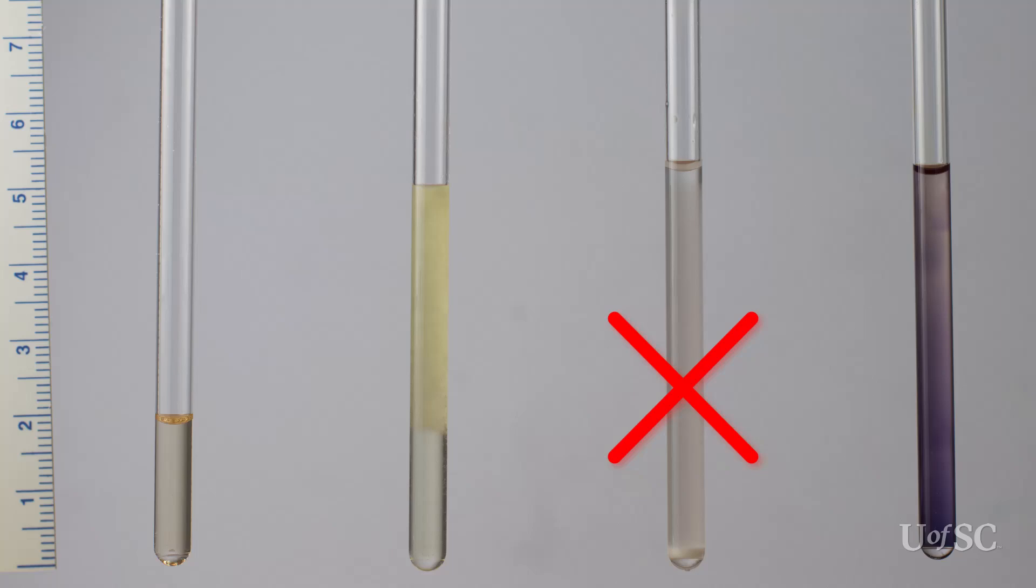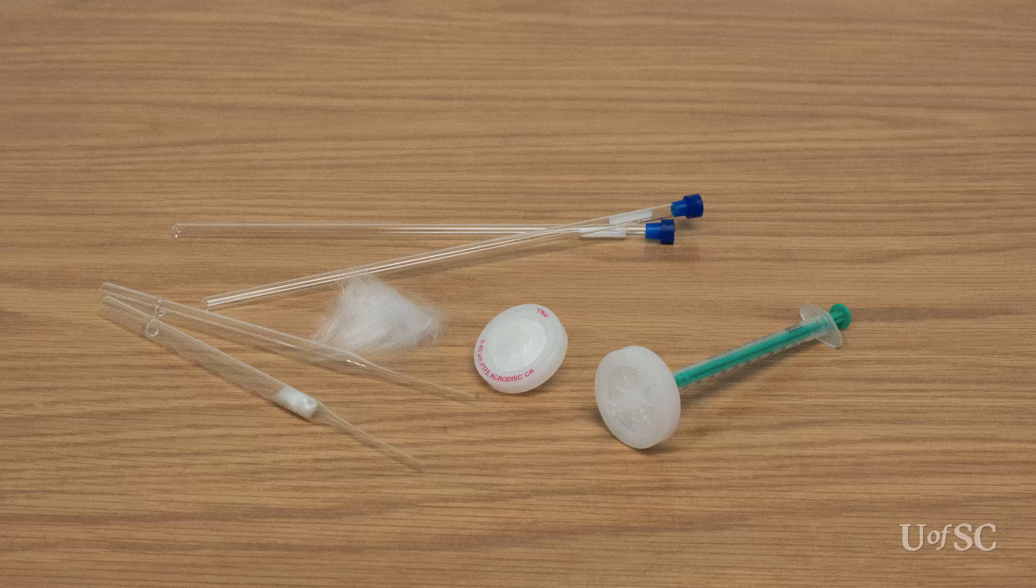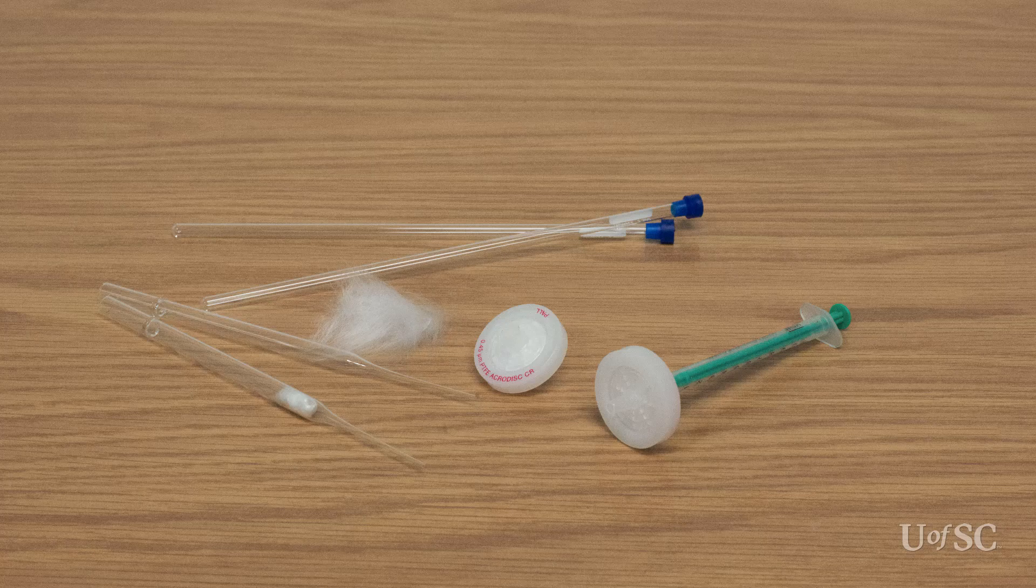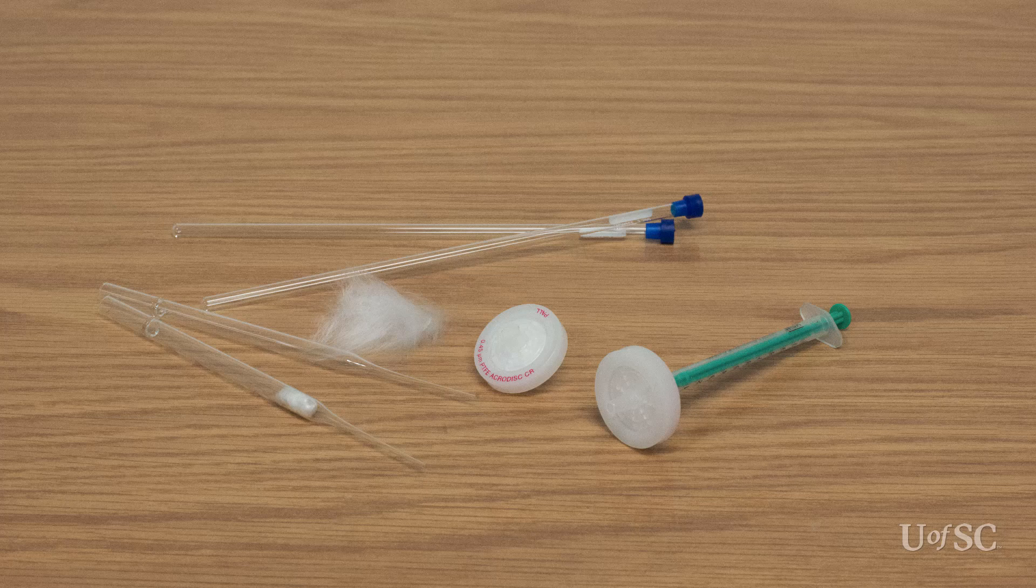Samples like these should be filtered, decanted or centrifuged to yield clear solutions. A pipette filled with glass wool is an effective filter for NMR samples. Syringe filters are also very good, but you could lose a significant volume of sample in the filter itself.